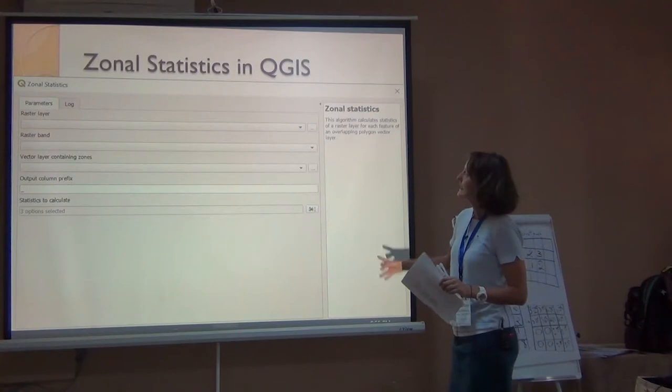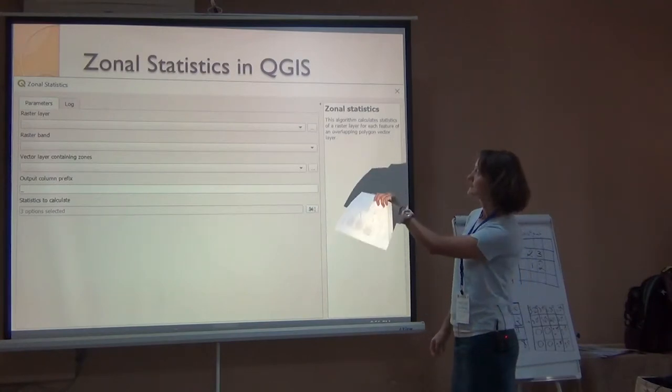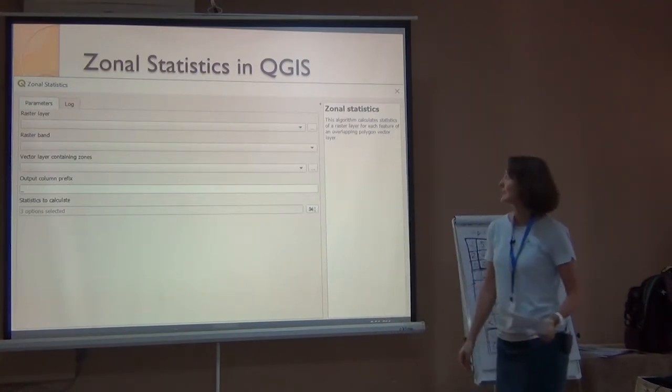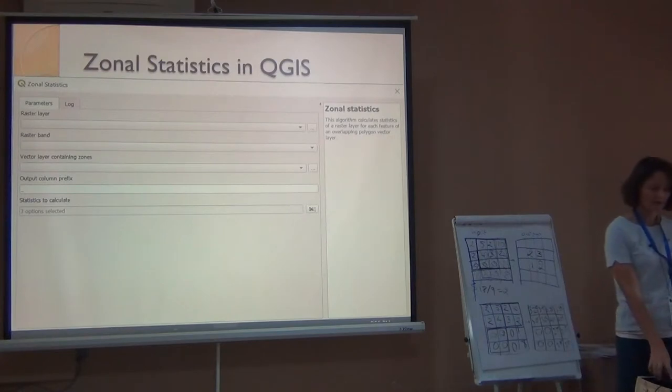And you can do min, max, et cetera. So in QGIS, this is called zonal statistics. Here's what the tool looks like. You have an input raster you specify. So they want a vector layer, but you could easily transform a raster into a vector and make sure. Not only do you need them to be the same code, probably, but you also need those collapse.